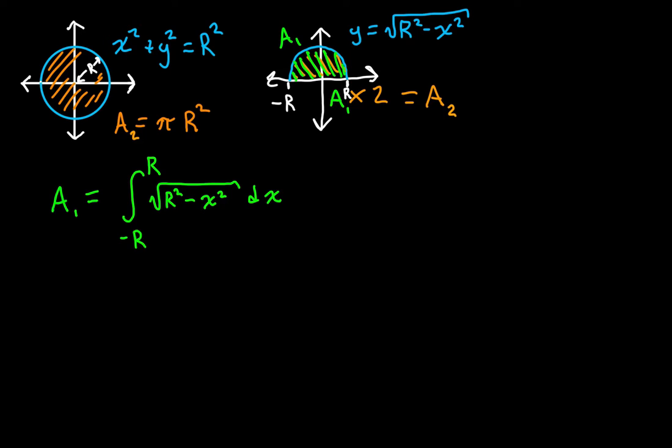I'm going to do a little something called trigonometric substitution. For the purposes of finding the integral, I'm going to say that x is equal to r times the sine of theta. You can think of theta as just some variable — because of the way the sine function works, we're treating theta as an angle. So x is equal to r times the sine of some quantity theta, basically being used as an angle.